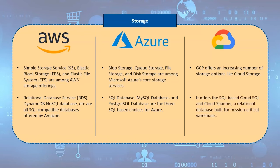The next parameter is networking. AWS uses Amazon Virtual Private Cloud, or VPC. Azure uses Azure Virtual Network, or VNet. And GCP uses Cloud Virtual Network.